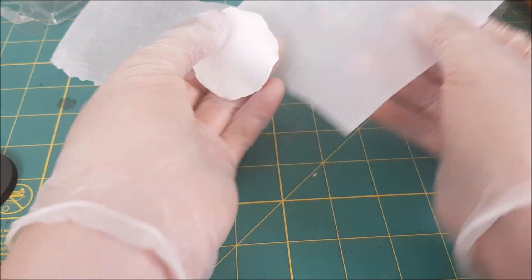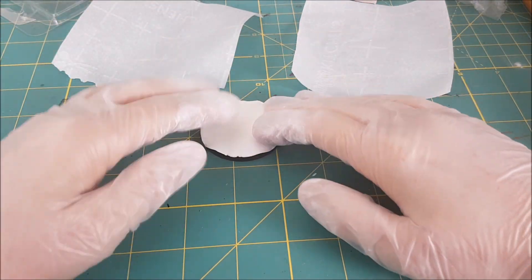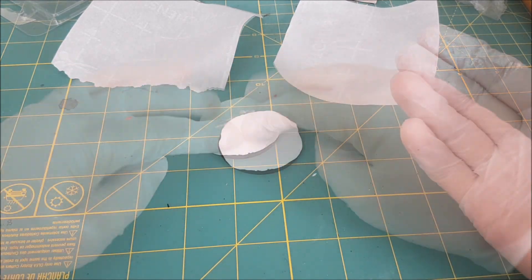Once I get it to a size that's roughly the same as the base, I'm going to press it down gently so I don't leave big fingerprints in it, and then I'm going to take out my texture roller that I got from Green Stuff World.